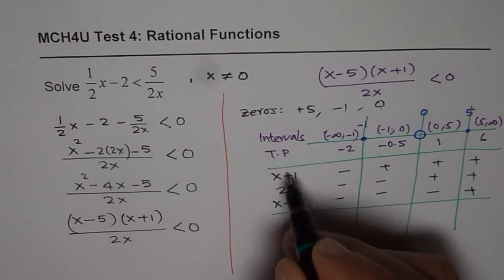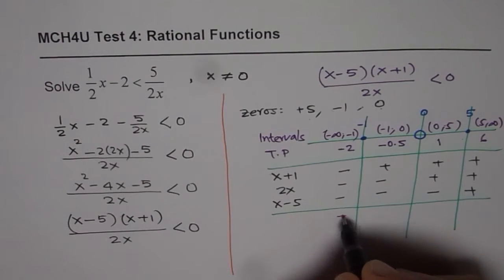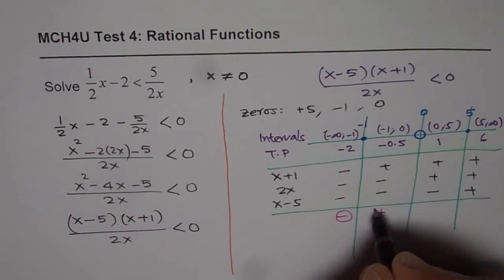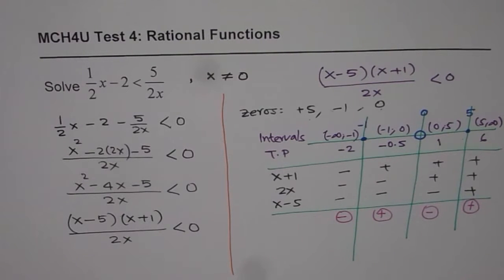Now, when we have multiplication and division of these factors, then what do we get? 3 negatives will give us 1 negative. 2 negatives will give us a positive. 1 negative is negative. All positive will result into positive.